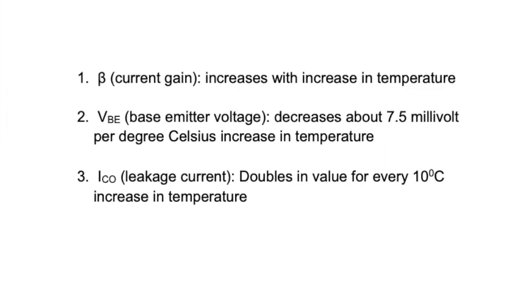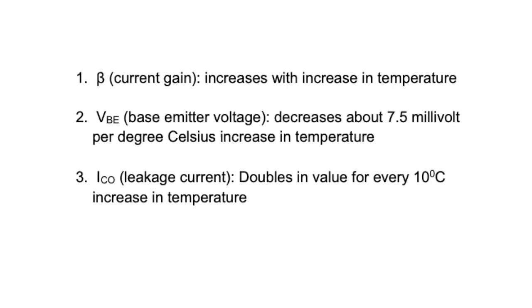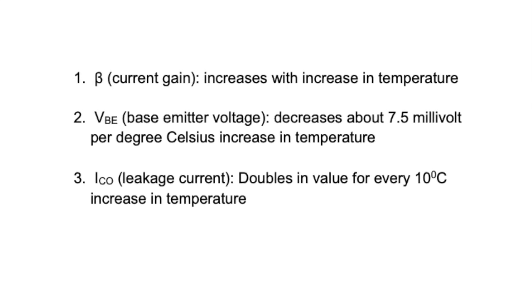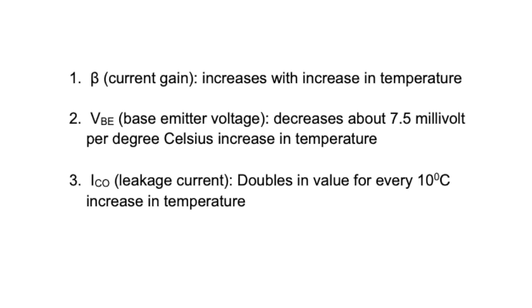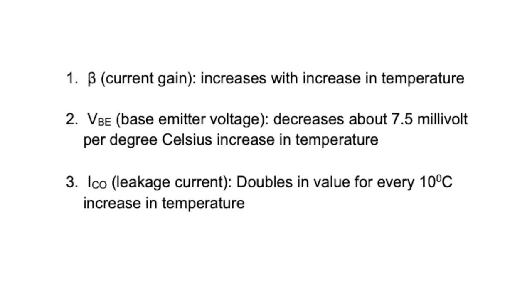In any amplifier employing a transistor, the collector current IC is sensitive to each of these parameters. Current gain, beta, increases with increase in temperature.